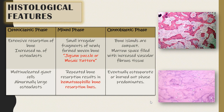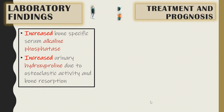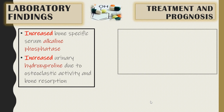During the mixed phase, bone islands are compact and the marrow space is filled with increased vascular fibrous tissue. In the osteoblastic phase, the laboratory findings include increased bone-specific serum alkaline phosphatase and increased urinary hydroxyproline due to osteoclastic activity and bone resorption.